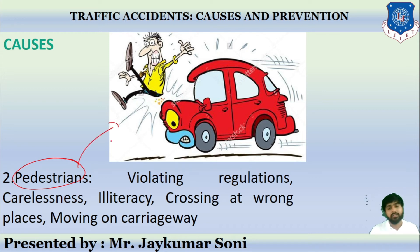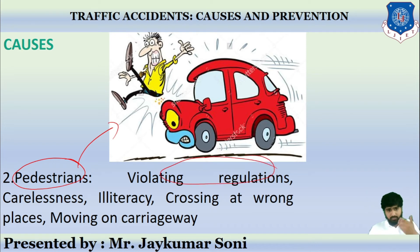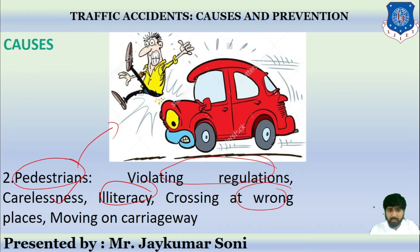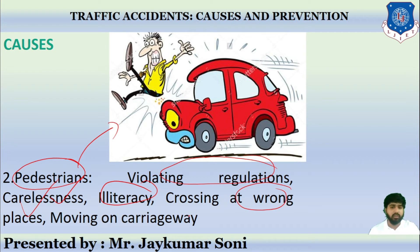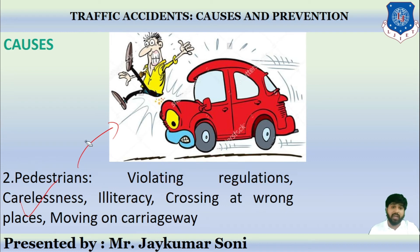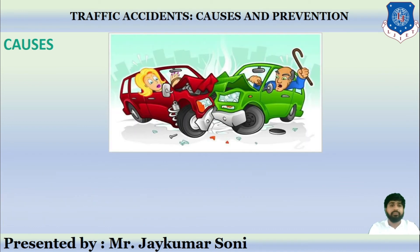Another cause involves pedestrians — people walking on the road. It is observed many times that people violate traffic regulations and are careless when crossing roads. This is due to illiteracy, not knowing the rules, crossing at wrong locations, or moving on the carriageway surface where vehicles are driven. Pedestrians contribute to accidents through violation of regulations, carelessness, illiteracy, crossing at improper locations, and moving on the carriageway.